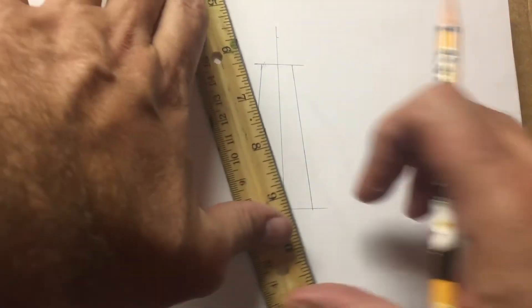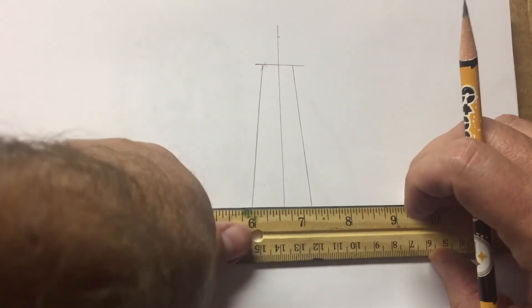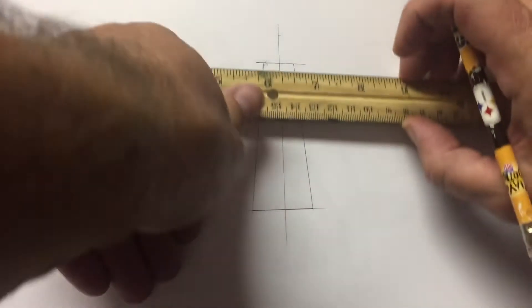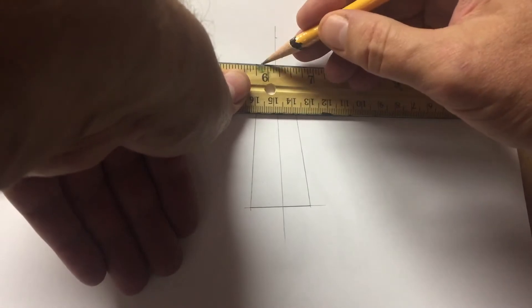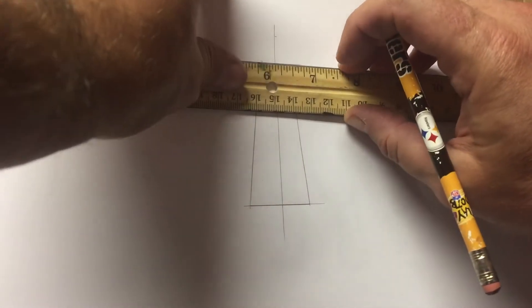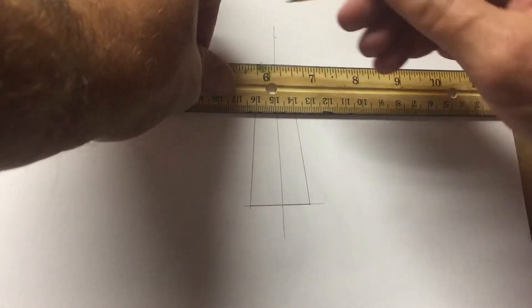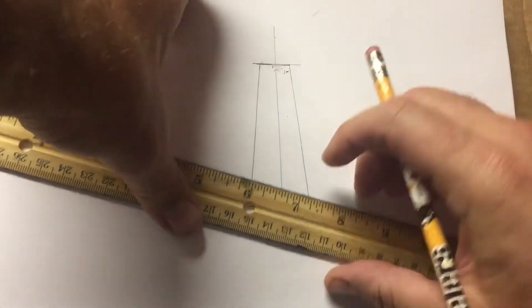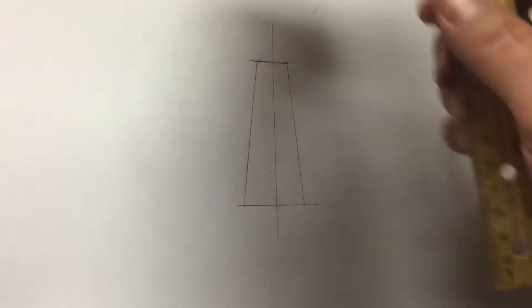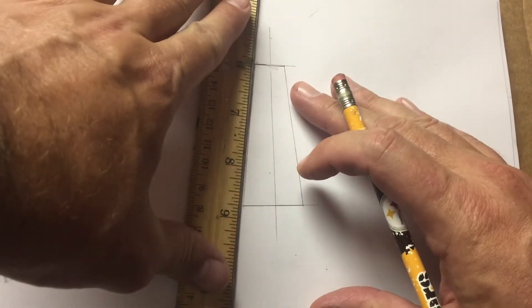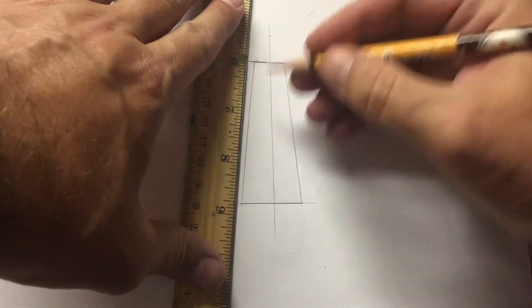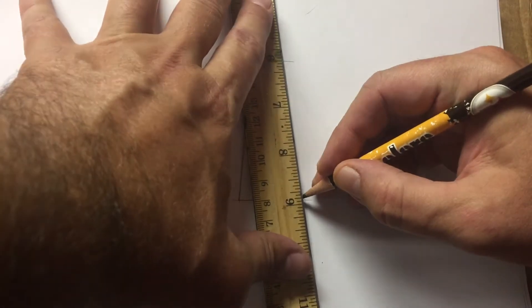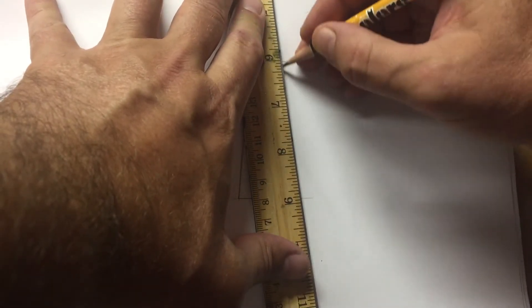Next we're going to add this rectangular shape. Right about there. And then the rectangle gets thinner at the top, just like that.